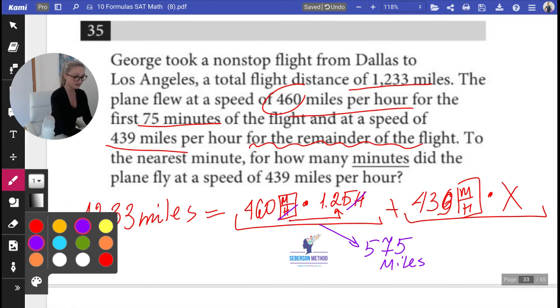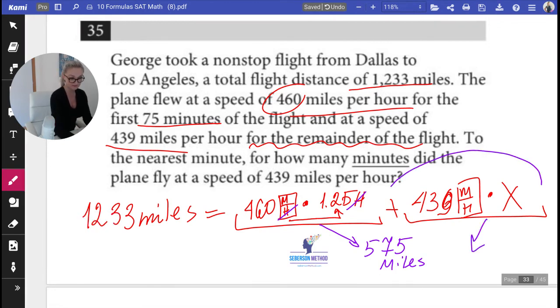Can we now calculate the total number of miles this distance was? Absolutely. We take 1,233, subtract 575, and we get 658.